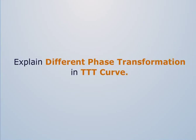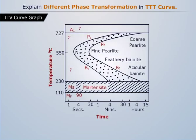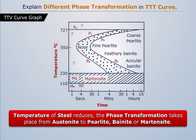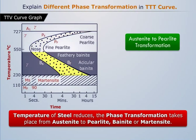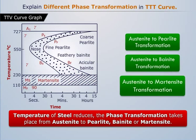Explain different phase transformations in TTT curve. With the help of TTT curve, we have studied that whenever temperature of steel reduces, the phase transformation takes place from austenite to pearlite, bainite to martensite. Now let's study each of the three transformations.